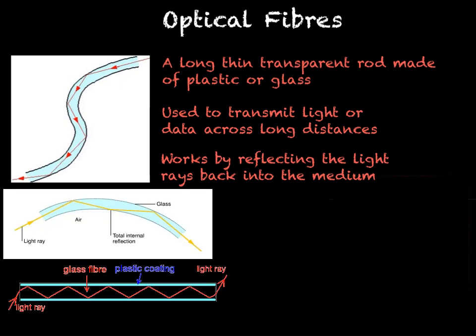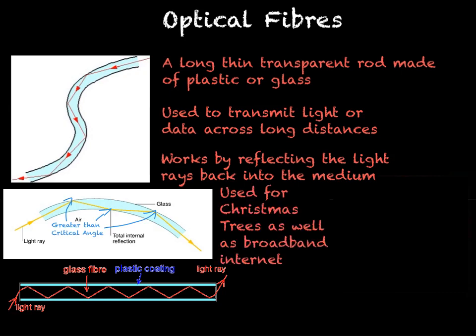Each time that the light ray reaches the boundary between the mediums, it does so at an angle greater than the critical angle. This causes it to reflect back into the medium. It will then do this at every boundary that it reaches. This causes the light to bounce along the fibre, meaning that it can be transmitted very quickly and with limited loss. This makes it suitable for Christmas trees as well as other lighting appliances, as well as for transmitting large amounts of data, for example, in fibre optic internet.